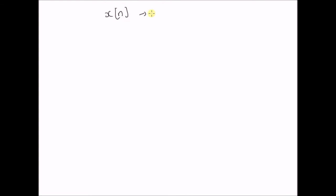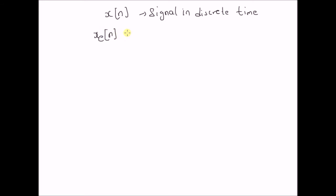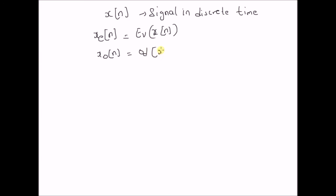it has two components. The first one is the even component x_e of n, which is equal to the even component of the signal. And then an odd component x_o of n, which is the odd component of the signal.